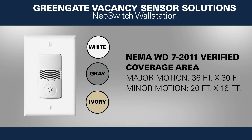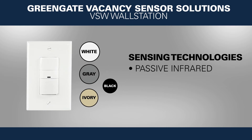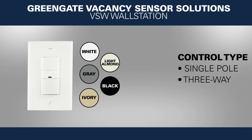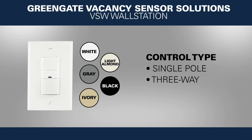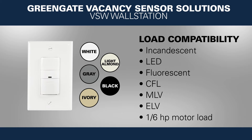The VSW wall station is available in white, gray, ivory, light almond, and black. It can be used in single pole and three-way applications, and it is compatible with a number of load types, including LEDs.